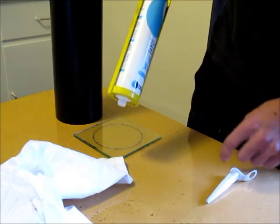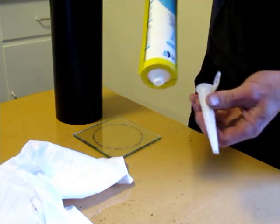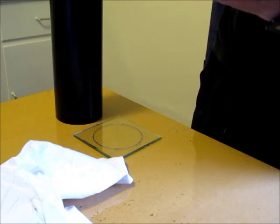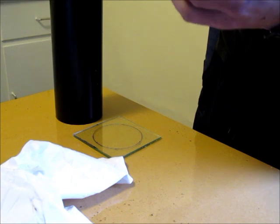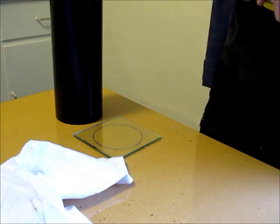I forgot to mention that I have already cleaned the glass and the tube with a cloth and some spirits. You don't want any grease or dirt on the glass or on the tube when you are going to glue it with the silicon.